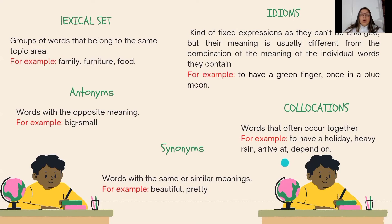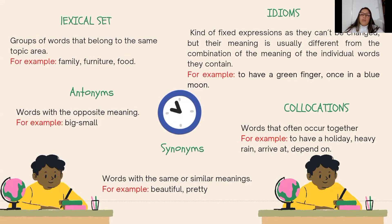Collocations are words that often occur together. For example, to have a holiday, if it rained, arrive at, depend on, and so on.